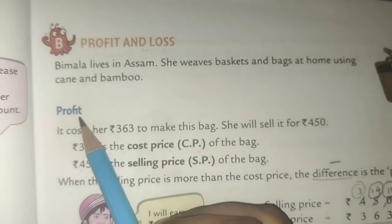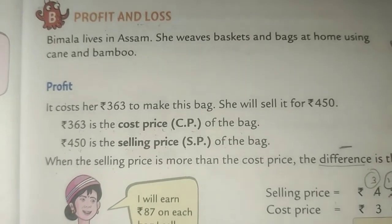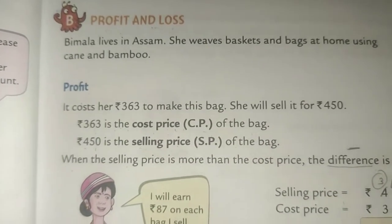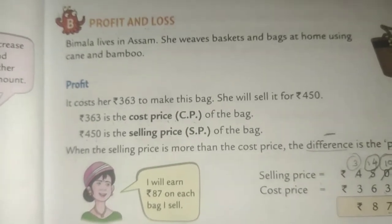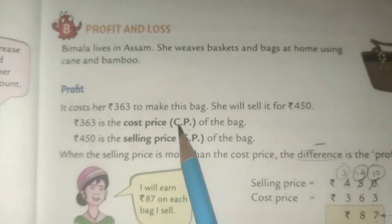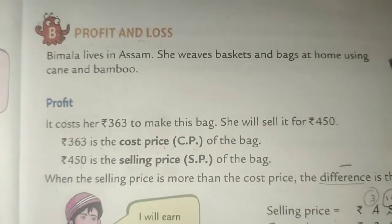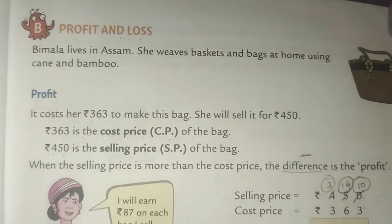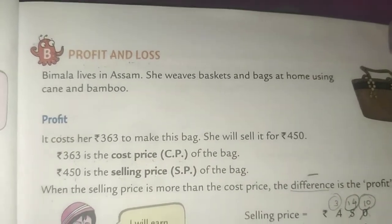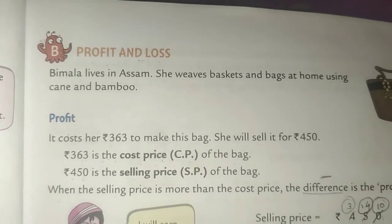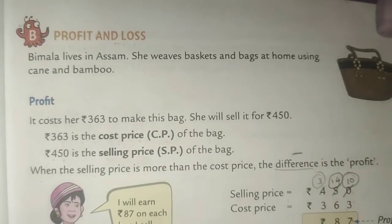The first topic is about profit. We have to find the cost price and selling price. Whenever you buy something and you pay for it, it is called the cost price. And when you sell something, the price you receive is called the selling price.